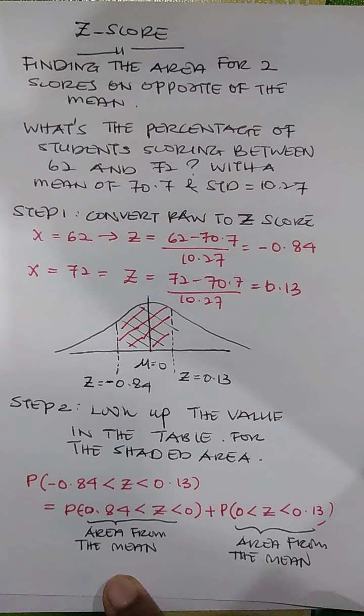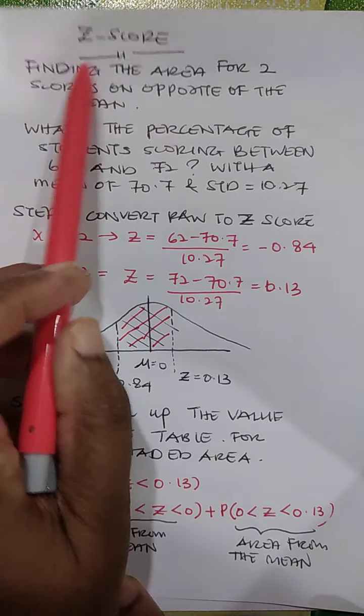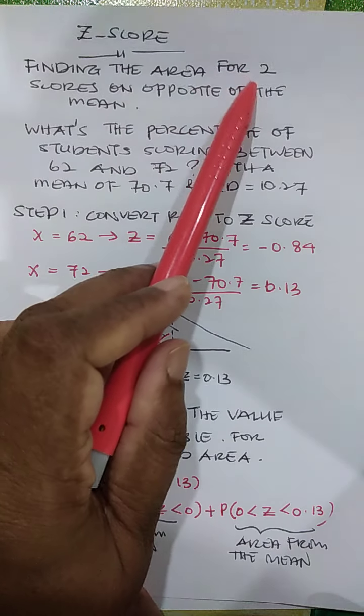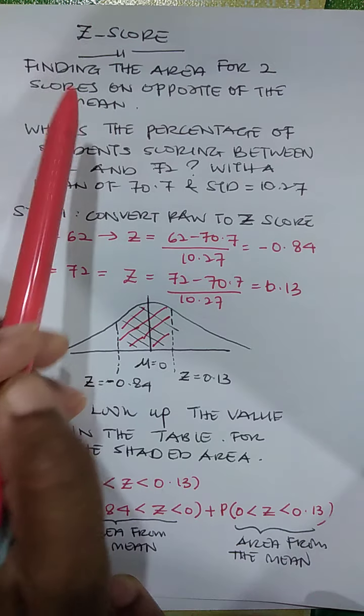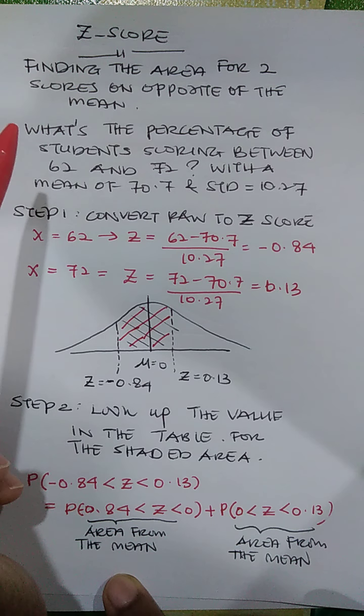Hello everyone, in this video I am going to show you how to find area for two scores on opposite of the mean. This is the second scenario in the Z scores.